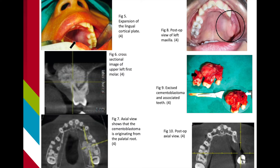In Figure 6, a cross-sectional image at the level of the maxillary first molar shows a well-defined hyperdense mass originating from the palatal root. In Figure 7, an axial section shows the cementoblastoma being apical to the furcation area of the first molar, indicating that the mass is originating from the palatal roots.